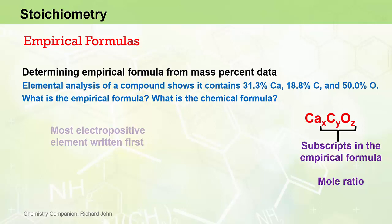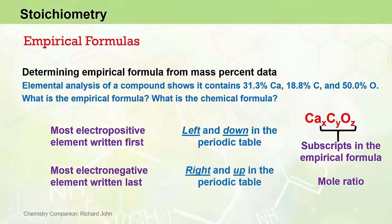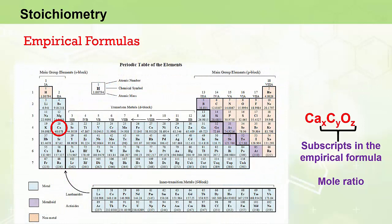When writing our empirical formula, we write the most electropositive element first and the most electronegative element last. Electropositive elements are found to the left and down in the periodic table, while electronegative elements are found to the right and higher up. So calcium, in group 2 on the left, is written first; oxygen, in group 16 on the right, is written last; and carbon, in group 14 in the middle, is written in between. From left to right: calcium, carbon, oxygen.